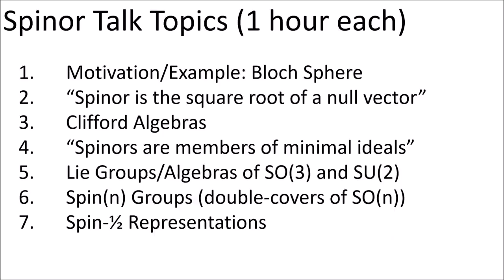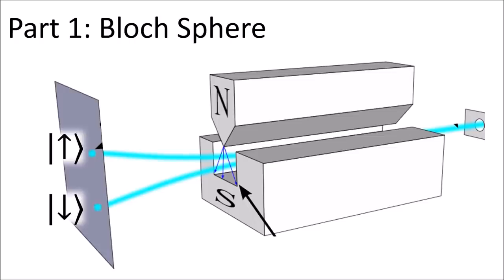So the seven topics I cover are listed here and I'm going to go over them quickly so you can see if they interest you. In part one I cover the Bloch sphere. This covers the Stern-Gerlach experiment where particles are fired through a magnetic field and collapse either onto the up spinor state or the down spinor state.